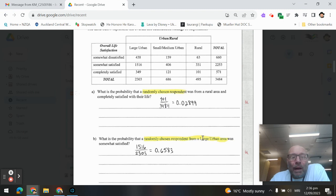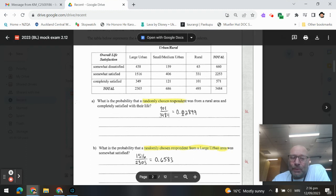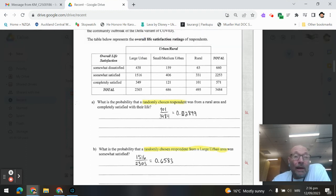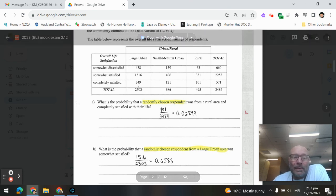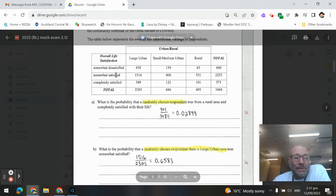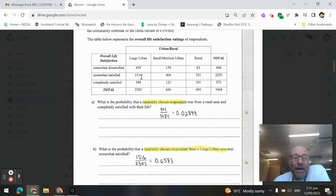Next one: What is the probability that a randomly chosen respondent from a large urban area was somewhat satisfied? With this one, we can see they are fine-tuning our column to being from a large urban area. That's why we know 2,303 will be the denominator. So, somewhat satisfied would be the 1,516 over 2,303.